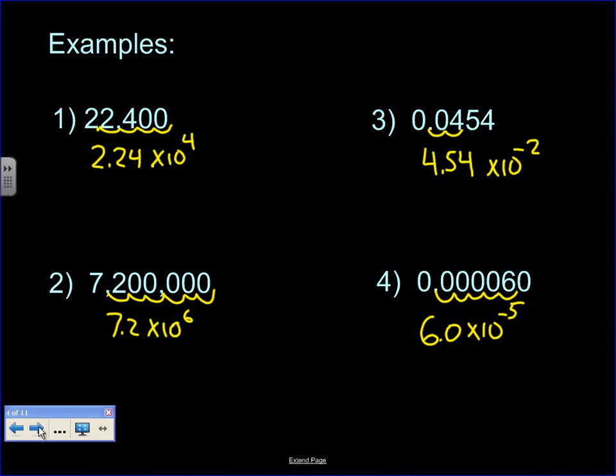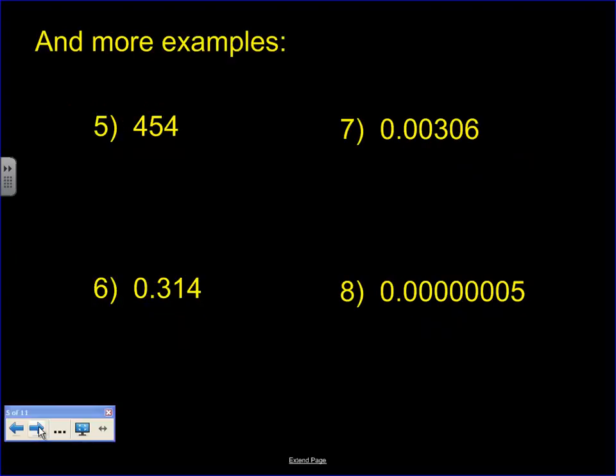Okay, a couple other quick examples here. This one looks much like the initial one that we had. I don't know why all my numbers started with 4. But 454, okay, move it 2 spaces. 4.54 times 10, we moved it 2 spaces, so 10 to the second. And in the next one, we move it 1 space, okay, so it becomes 3.14 times 10 to the negative 1.